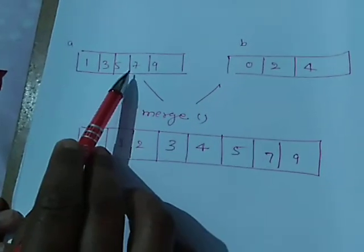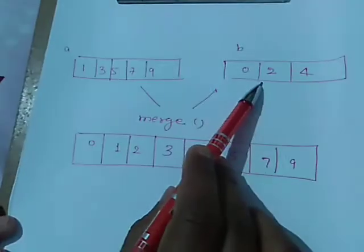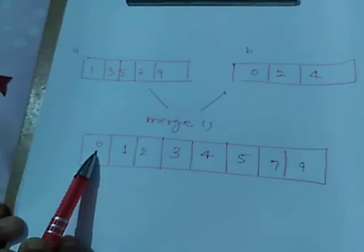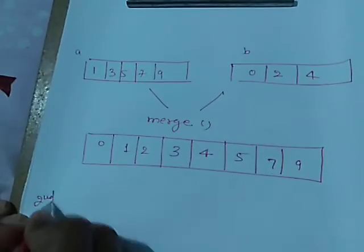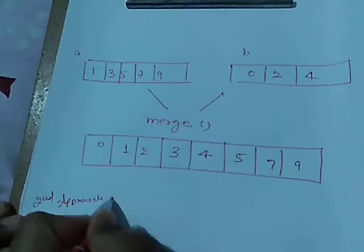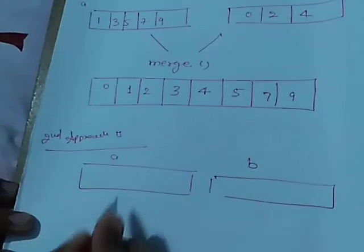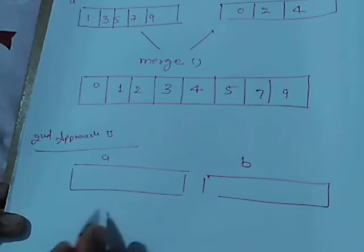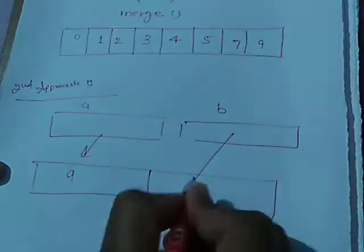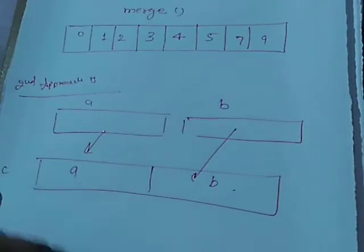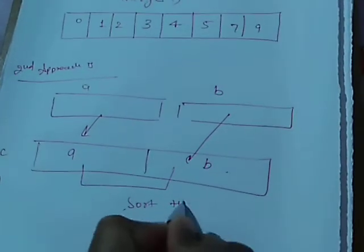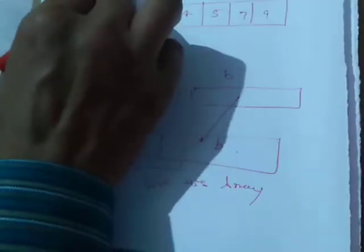Method one: we have two sorted arrays and compare elements one by one, placing them into a third array. Method two: we have two arrays a and b that are not in sorted order — we put all elements of array a and array b into a third array, and then sort that array. This second method is quite easy in comparison to the first method.